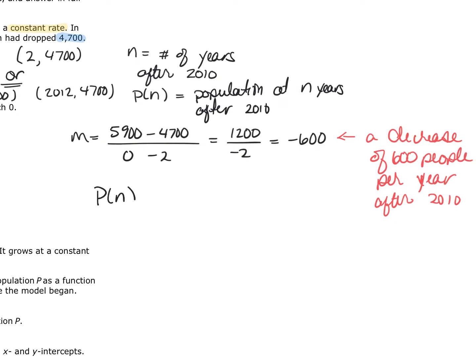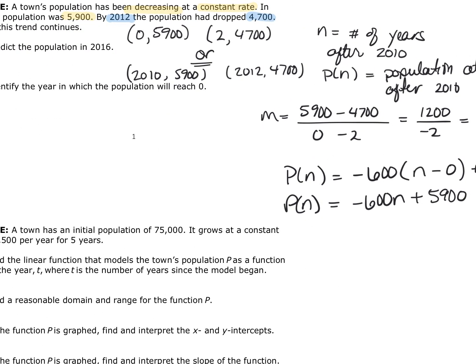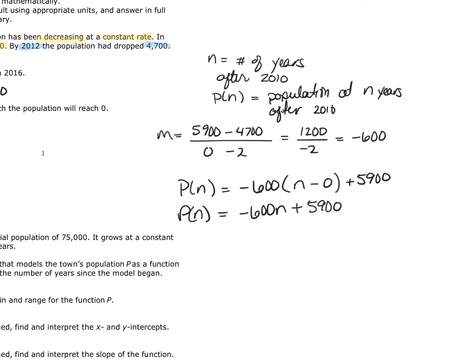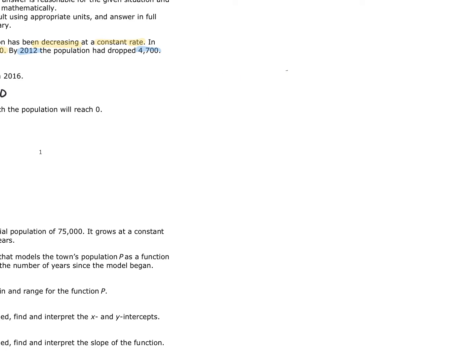Now I'm ready to then continue on with building the equation. So I have P of N, I'm going to use a modified point slope is equal to negative 600. And then I have my N minus my first ordered pair. Well, I'm going to use zero and then plus 5,900. So I have negative 600 N plus 5,900. Now that is my equation. So all I've done so far is found a linear equation that models this situation.